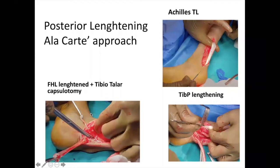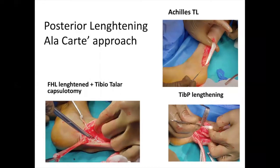We also address the toes and big toes — because when you release just the tendo Achillis, these children walk on tip toes with flexed toes and develop ulcers on the toes. Therefore it should be an all-inclusive approach when tackling cerebral palsy: TAL and — lengthening of tibialis posterior as well.